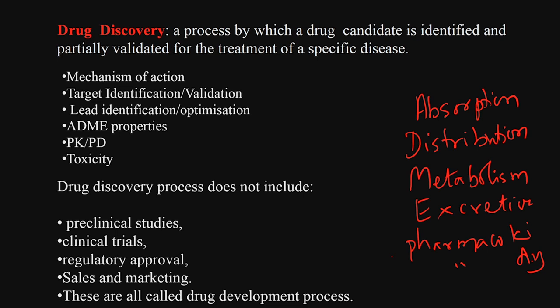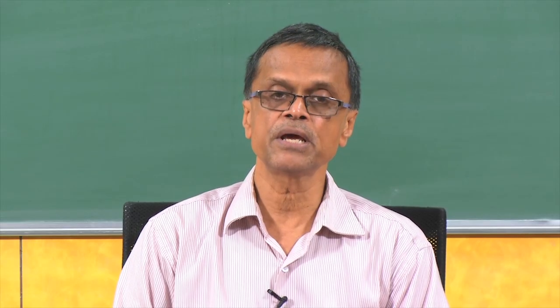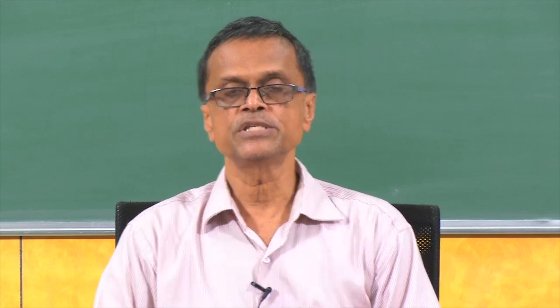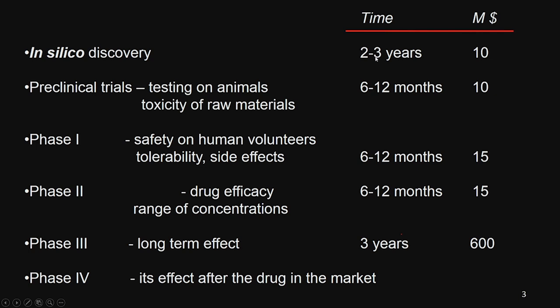We are not going to talk about preclinical studies, clinical trials, regulatory approval, sales, and marketing — those are not part of the drug discovery process we focus on. It is a very long and expensive process. In silico means using computational tools; in vitro means laboratory biochemical and proteomic assays; and in vivo means using animals. So there are three types of terminology: in silico, in vitro, and in vivo.